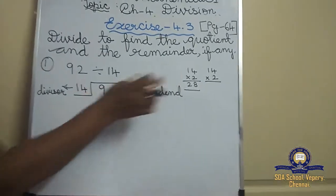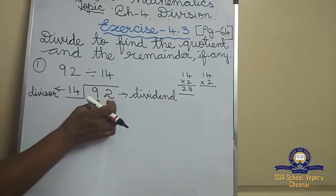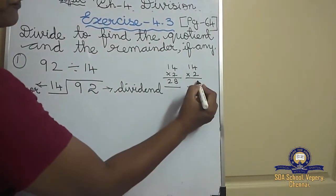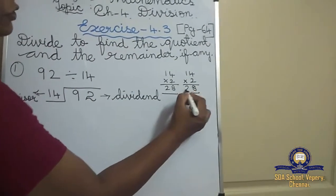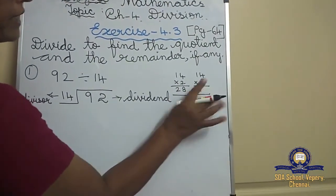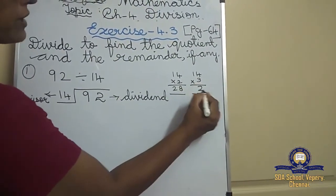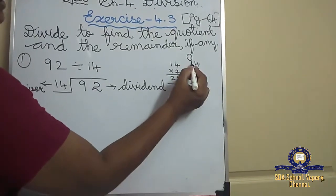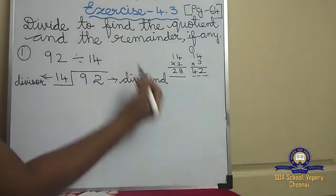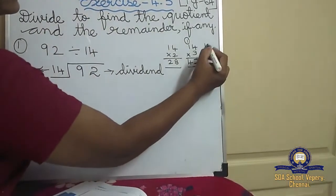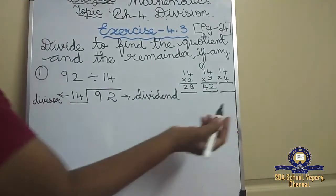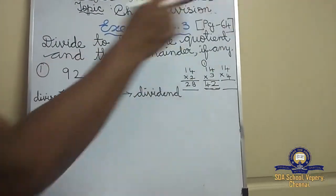You have to multiply until you reach 92 or the closest number below it. Let's continue: 14 fours — 4 fours are 16, 4 ones are 4, so 56. 14 fives — 5 fours are 20, 5 ones are 5, plus 2 is 7, so 70. 14 sixes — 6 fours are 24, 6 ones are 6, plus 2 is 8, so 84. Otherwise you have to memorize all the tables — 14, 15, 16 — we have to.